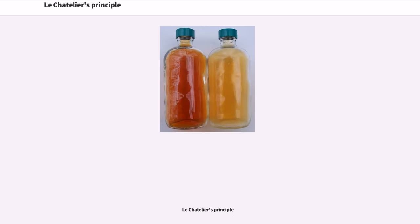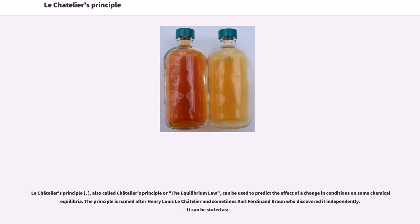Le Chatelier's Principle, also called Chatelier's Principle or the equilibrium law, can be used to predict the effect of a change in conditions on some chemical equilibria. The principle is named after Henry Louis Le Chatelier and sometimes Carl Ferdinand Braun, who discovered it independently.